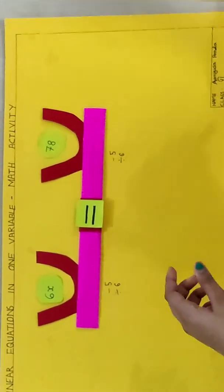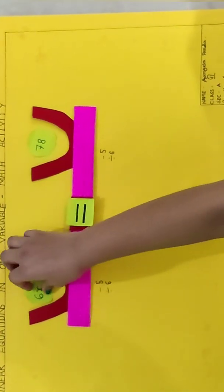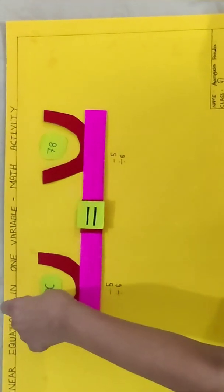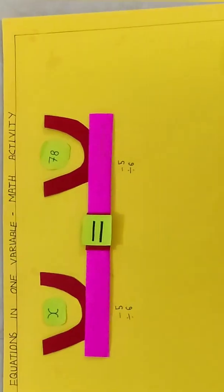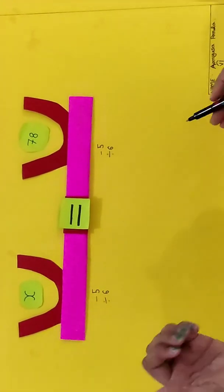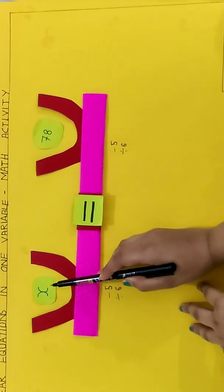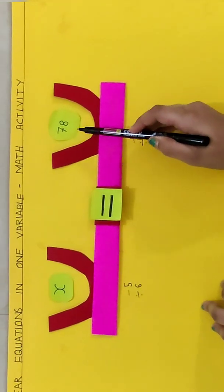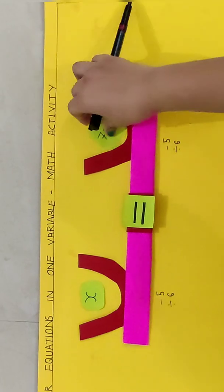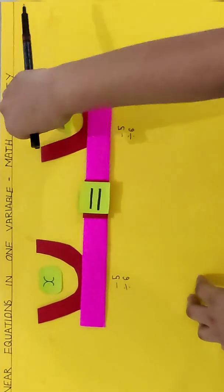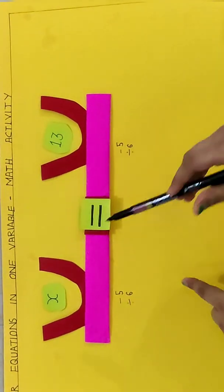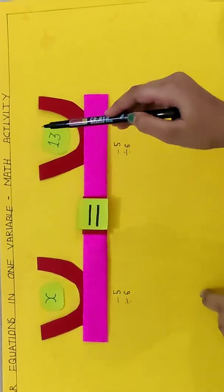So if we will divide 6 on both the sides, the LHS part is x now and the RHS part is going to be 30. So here we got the value of x which is equal to 30.